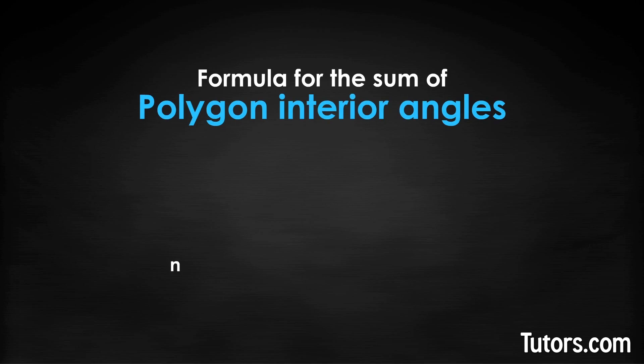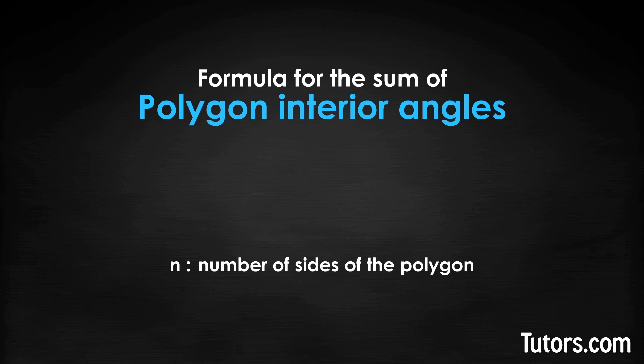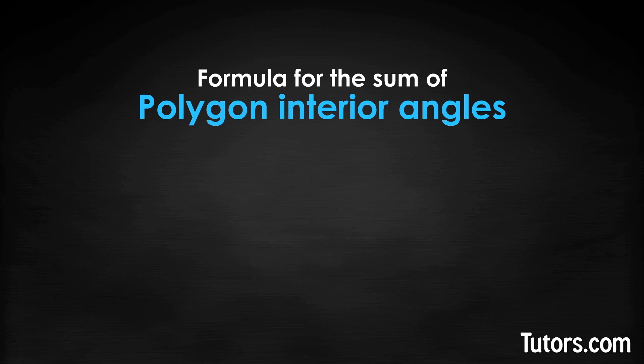Our dodecagon has 12 sides and 12 interior angles. The formula for the sum of a polygon's interior angles is refreshingly simple. Let n equal the number of sides of whatever regular polygon you are studying. The formula is: the sum of interior angles equals (n − 2) × 180 degrees.